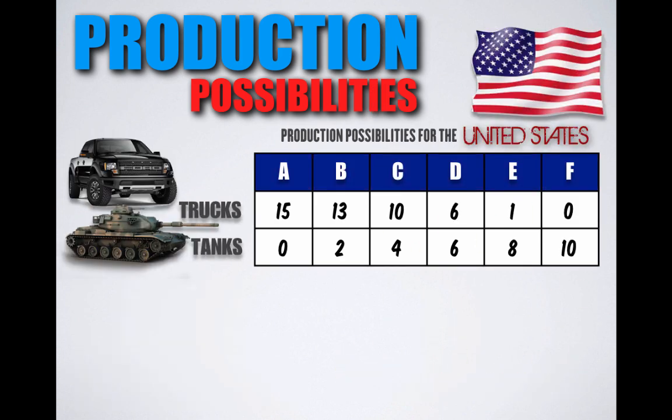Let's do a little more practice before we finish. Here we have a function that shows us the production possibilities for the United States. Given its current level of resources, the United States can produce two goods: trucks or tanks.